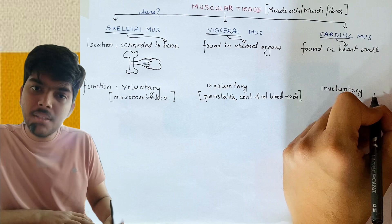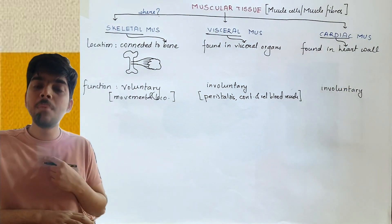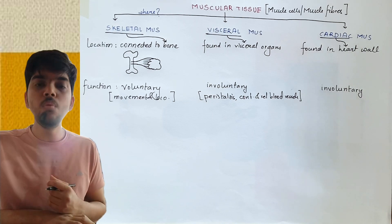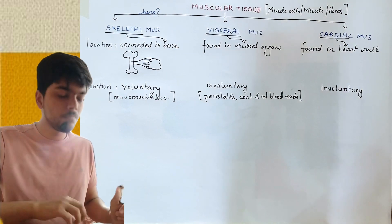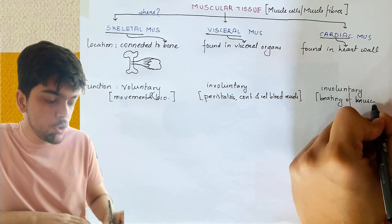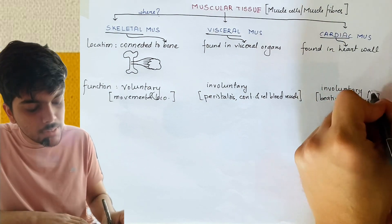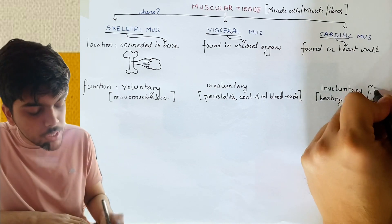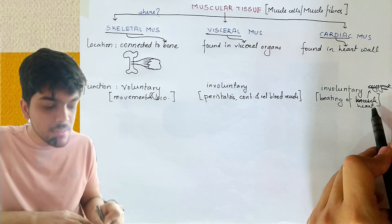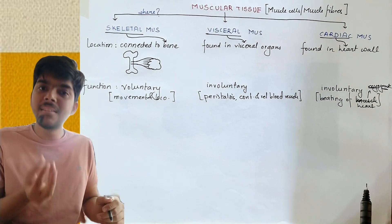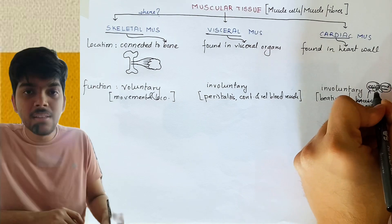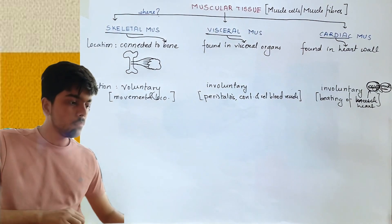Your heart beats because it wants to beat — I am not able to control the beating of my heart. I can't willingly stop my heart or control the rate at which it beats. The beating of the heart is due to cardiac muscle, and it is myogenic. Myo refers to muscle, genic refers to generation. This means the impulse generated for the beating of the heart generates in the muscle of the heart itself.